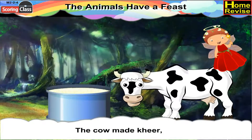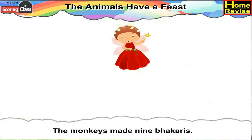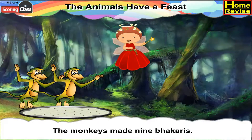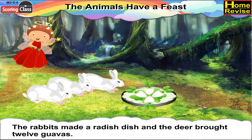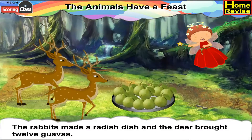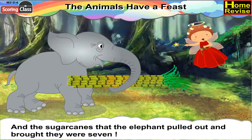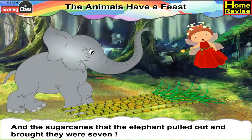The cow made kheer. The monkeys made nine bhakries. The rabbits made a radish dish. The deer brought twelve guavas. And the sugar canes that the elephant pulled out and brought — they were seven.